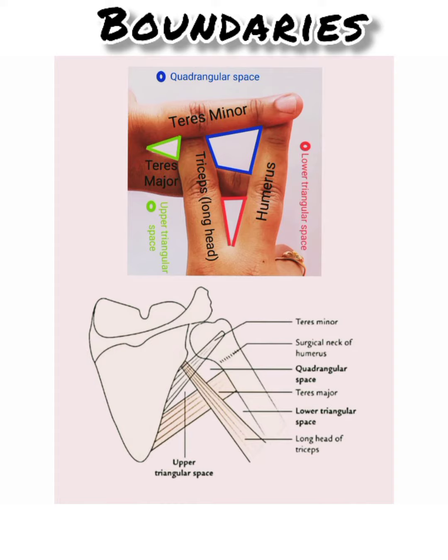Now coming to the lower triangular space. The medial border is formed by the long head of triceps and the lateral border is formed by the shaft of humerus. The superior border is formed by the teres major.